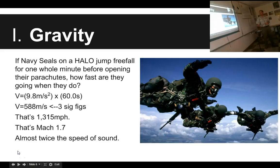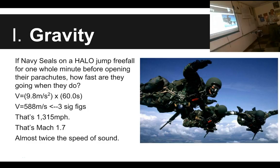Gravity's acceleration times time gives you velocity. Let's do an example: Navy SEALs on a HALO jump free-fall for one whole minute before opening their parachutes. How fast are they going when they open their parachutes? Ignoring wind resistance — they don't actually reach this speed — velocity equals 9.8 m/s² times 60 seconds. Multiply 9.8 by 60 and round to three significant figures: the velocity is 588 meters per second.